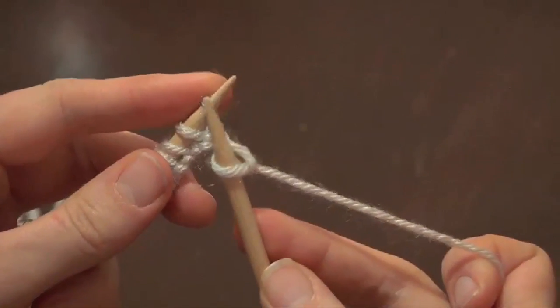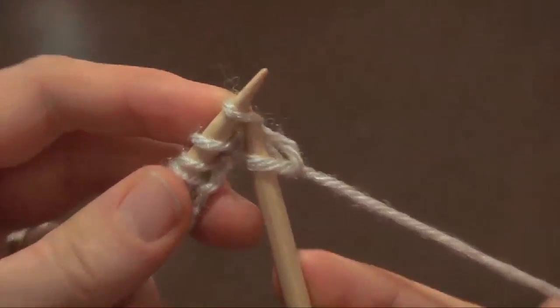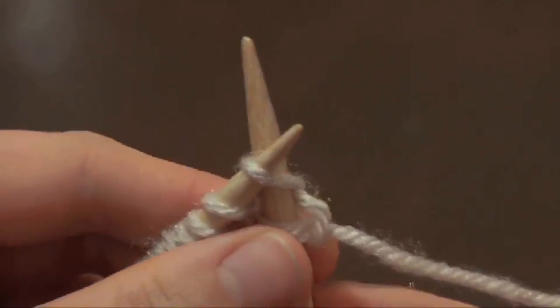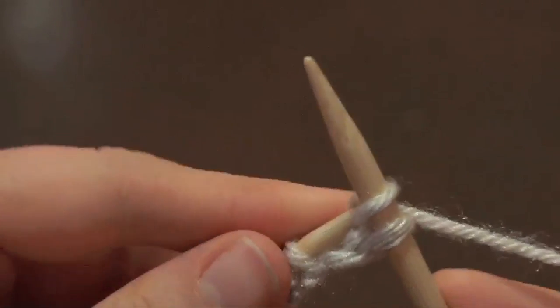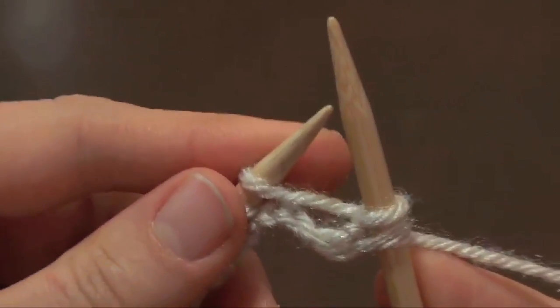And you're going to do that again. Slide the needle into the first loop, create that X, bring your yarn around, pull through, and pull the stitch off your left hand needle.